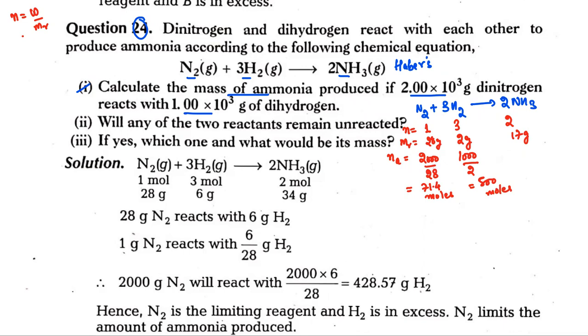When we had to take 1 mole of nitrogen we had to take 3 moles of hydrogen. So if we take 71.4 moles nitrogen, how much hydrogen? 71.4 into 3. So for 71.4 moles of nitrogen, hydrogen should be 214.2 moles. We will need to have this many moles, but actually we have 500 moles. This means hydrogen is an excess reagent.